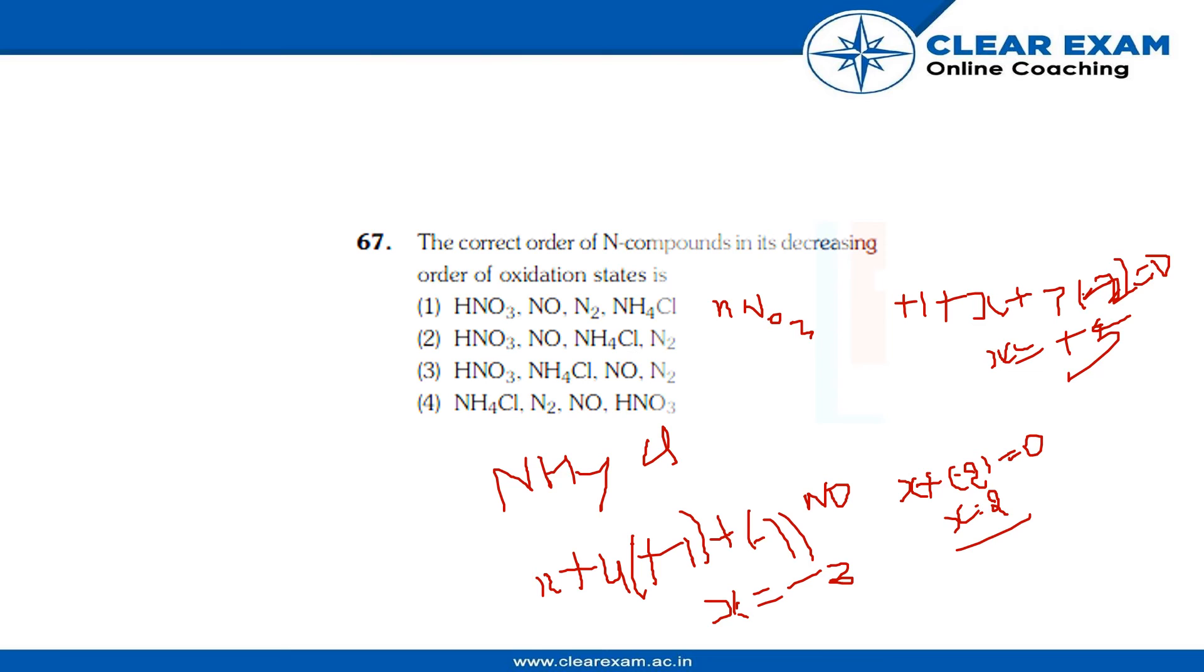So we can easily tell the order. The order will be HNO3 which has +5. Let's check which option. This option cannot be possible, and next is NO